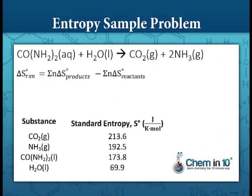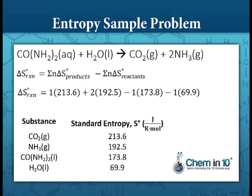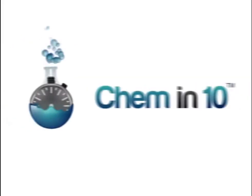We start with carbon dioxide — the standard entropy of CO₂ is 213.6, and we have one mole of it — plus the entropy of ammonia, 192.5, but we have two moles of that, so plus 2 × 192.5. We subtract the entropies of the reactants: urea (CO(NH₂)₂) has an entropy of 173.8 for one mole, and liquid water has an entropy of 69.9. Totaling all of that up, we get the standard change in entropy as 354.9 joules per mole·kelvin.